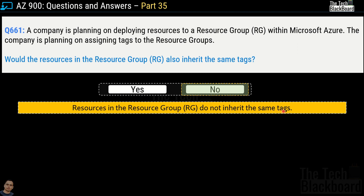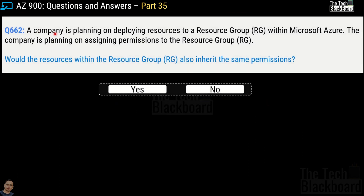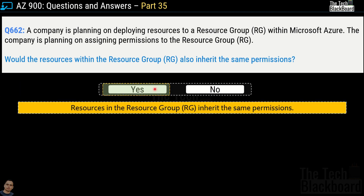Now you might be thinking: is there anything that the resources inherit from the resource groups? Question number 662 says a company is planning on deploying resources to a resource group within Microsoft Azure. The company is planning on assigning permissions to the resource group — would the resources within the resource group also inherit the same permissions? This time the correct answer is yes. Unlike tags, resources in the resource groups do inherit the same permissions.